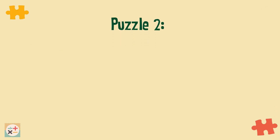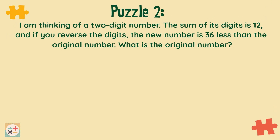Puzzle 2. I am thinking of a two-digit number. The sum of its digits is 12, and if you reverse the digits the new number is 36 less than the original number. What is the original number? Pause the video now if you want to figure it out for yourself. Let's use algebra to solve this. We'll use variable x for the tens digit and the variable y for the units digit. Let's write out the clues in the question algebraically.